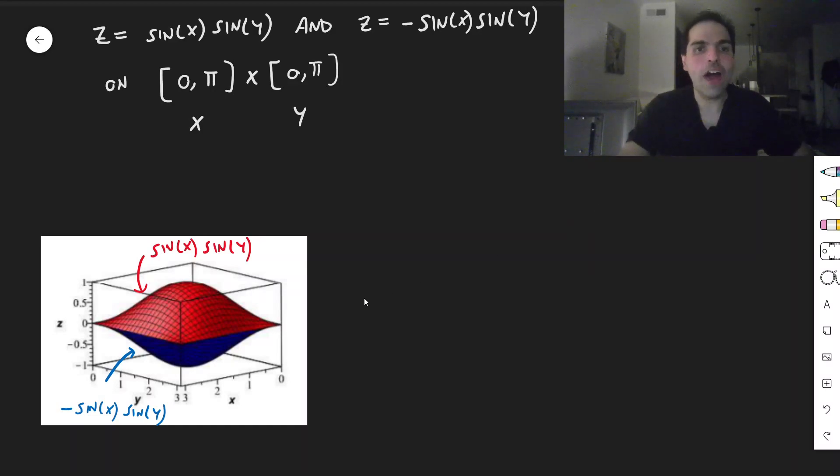So, the question is now, how can we find a volume? So remember, the volume can be written as a double integral of the bigger function here, which is sine of x sine of y, minus the smaller function, which is minus sine of x sine of y, dx dy. So, as usual, just like in calculus, we have areas between curves. You do the integral of the bigger function minus the smaller function. Well, here it's with the double integral.